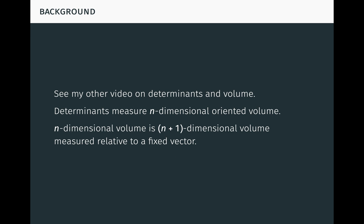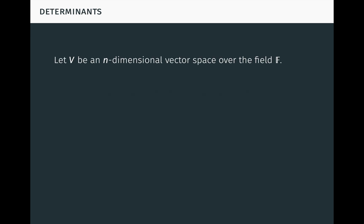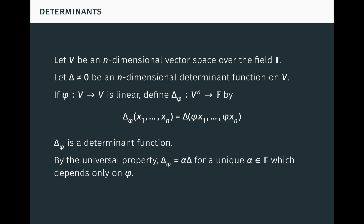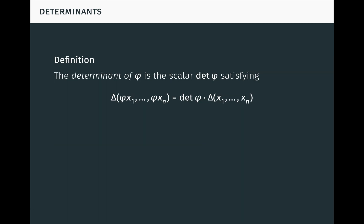Let's now get started by defining the determinant of a linear map. Let V be an n-dimensional vector space over the field F. Let delta be a non-zero n-dimensional determinant function on V. If phi is a linear transformation of V, define delta-phi from V^n to F by delta-phi of (x1,...,xn) equals delta of (phi(x1),...,phi(xn)). Notice that delta-phi is multilinear and alternating, so delta-phi is a determinant function. By the universal property of delta, delta-phi equals alpha times delta for a unique scalar alpha which depends only on phi.